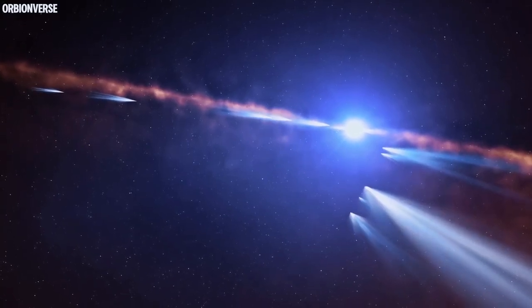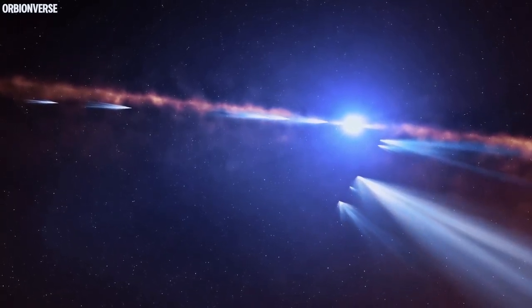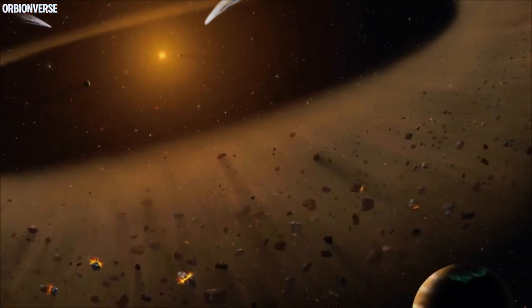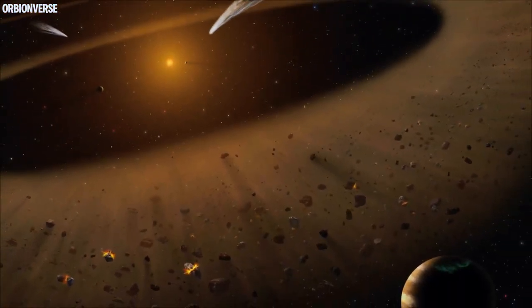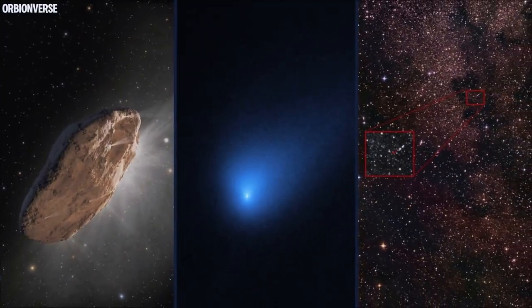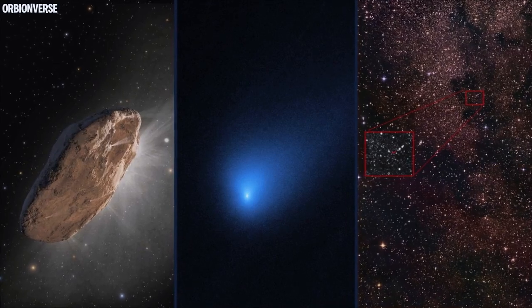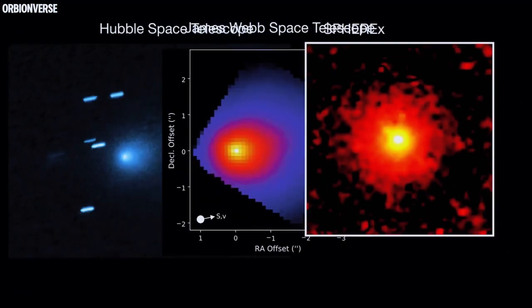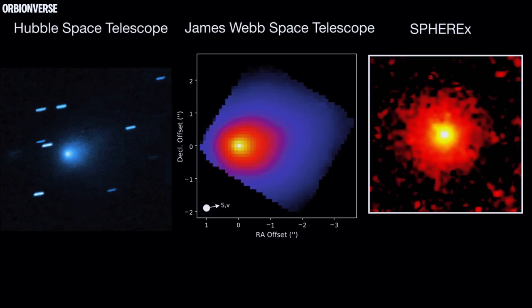Three objects, three paths, one intersection in space. Some scientists quietly believe that this isn't random—that something from outside, something hidden in 3I Atlas, may have triggered these comets. A resonance, a signal, or a call. And if that's true, the question isn't what 3I Atlas is. The real question is: who or what sent it?